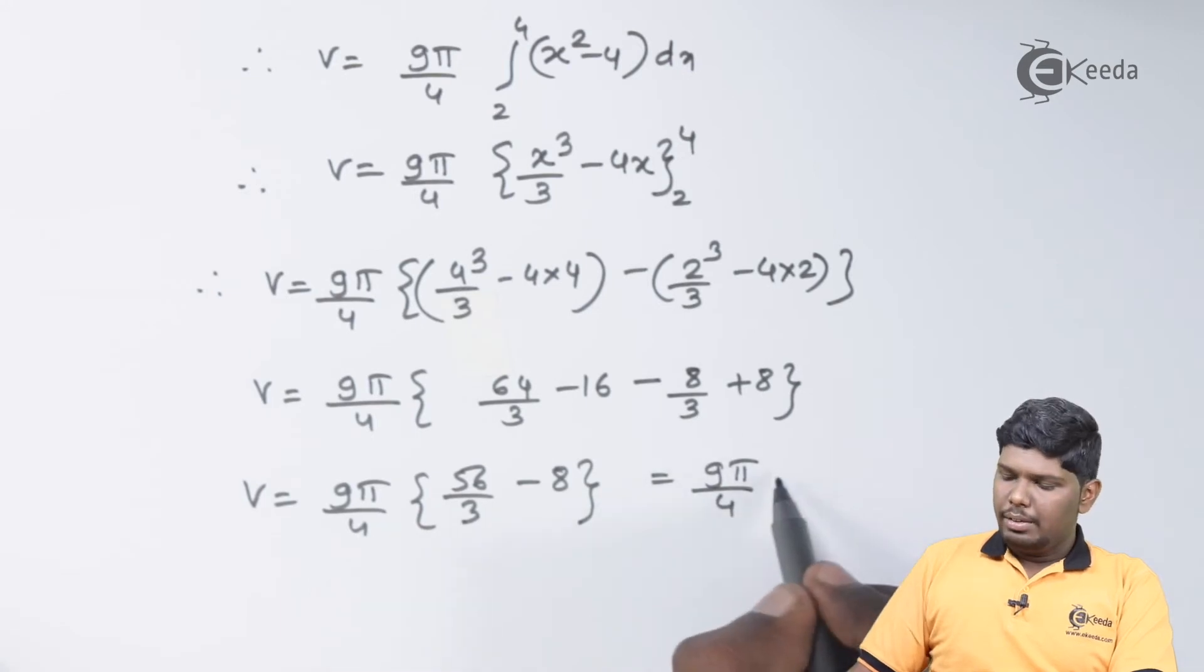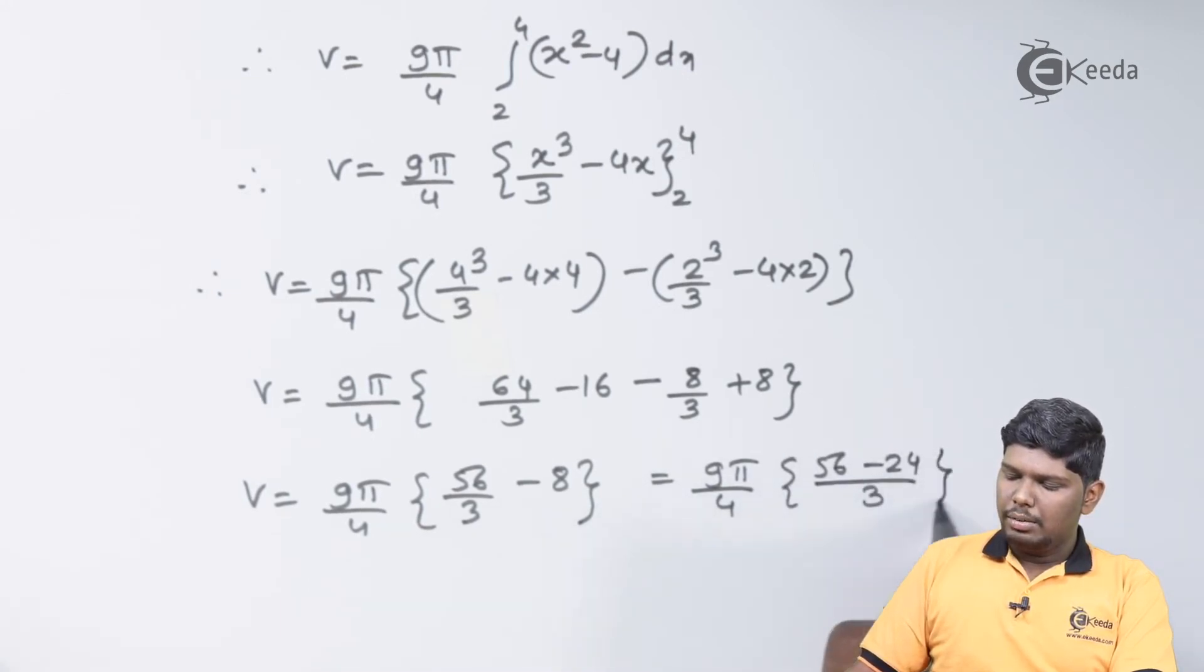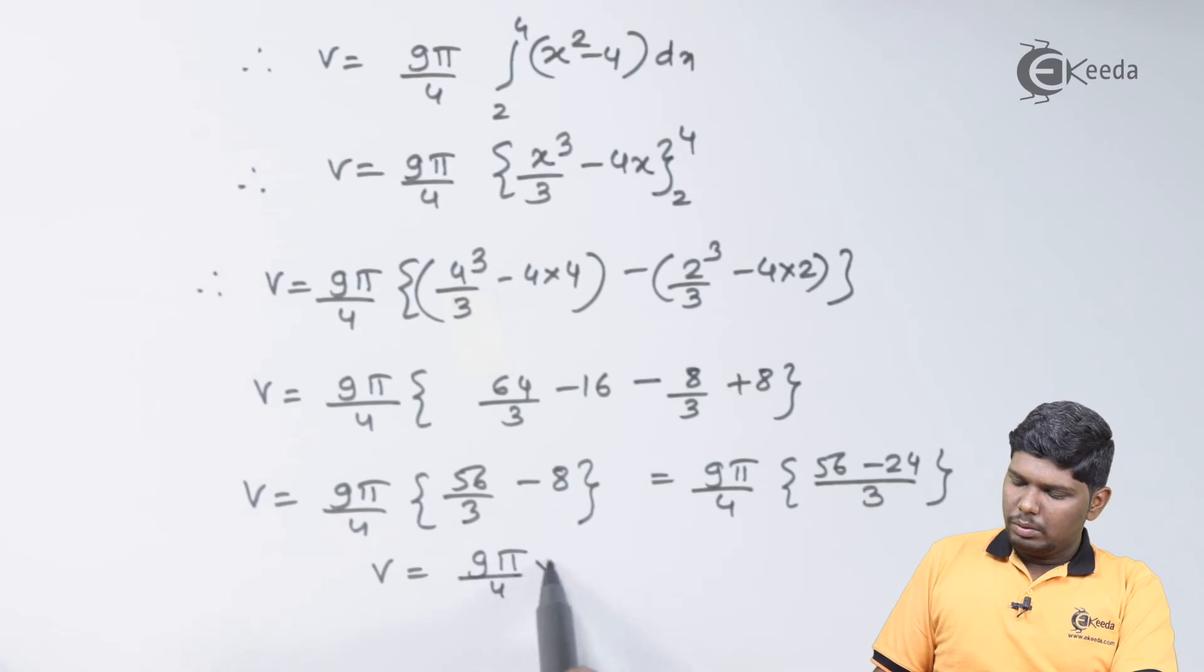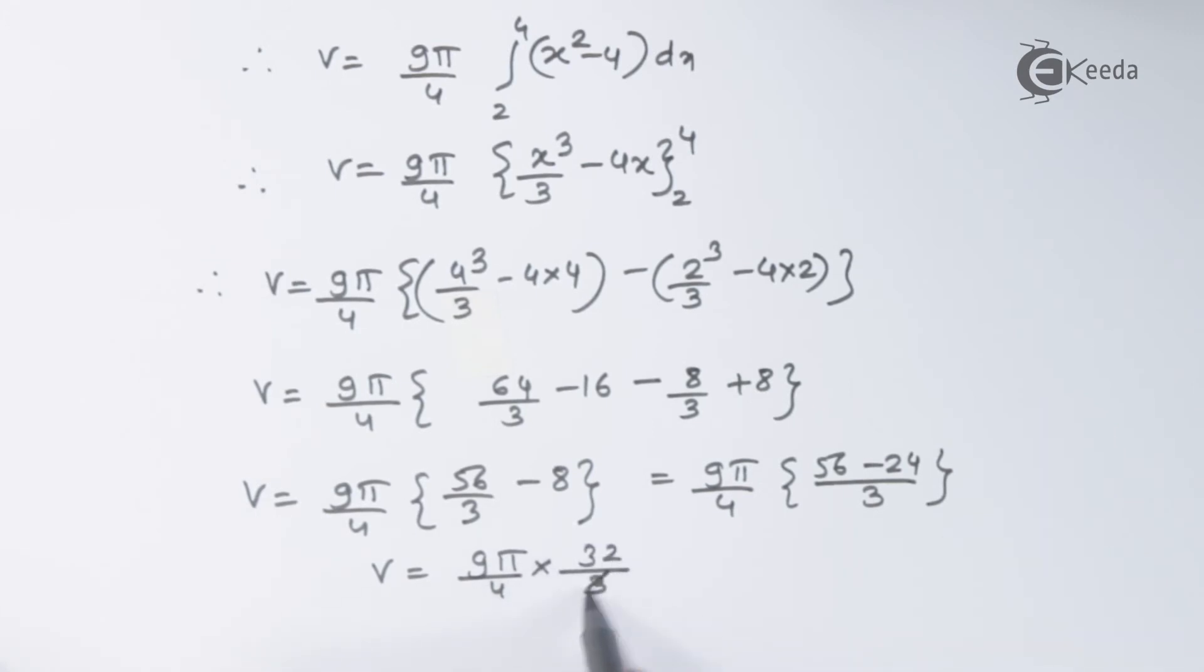On further solving we have 56 - 24 upon 3. 56 - 24 will give you 32 upon 3, so we have 9π/4 × 32/3 = 8×3×π, that is 24π cubic units.